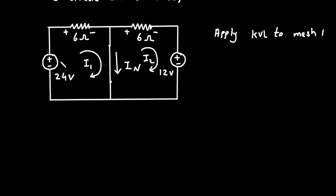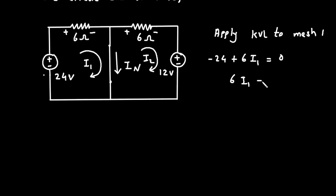According to KVL, if we start from this point, it will be minus 24, then plus 6 into I1 is equal to 0. If we take minus 24 on the right side, it will be 6I1 is equal to plus 24. Therefore, I1 is equal to 24 divided by 6, so I1 is 4 ampere.